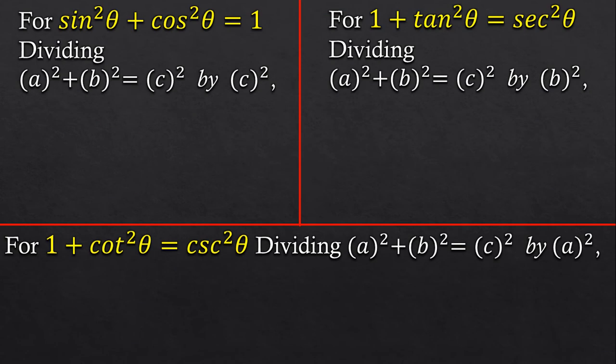Alright, after completing the groundwork, we finally reach the derivation of the proof. So we will start with all the three identities simultaneously because they are all similar. As you can see, for sin square theta plus cos square theta equals to 1, we divided the Pythagoras theorem by c square. For tan square theta plus 1 equals to sec square theta, we divided that by b square. And for cot square theta plus 1 equals to csc square theta, we divided the Pythagoras theorem by a square. So you must be thinking why.